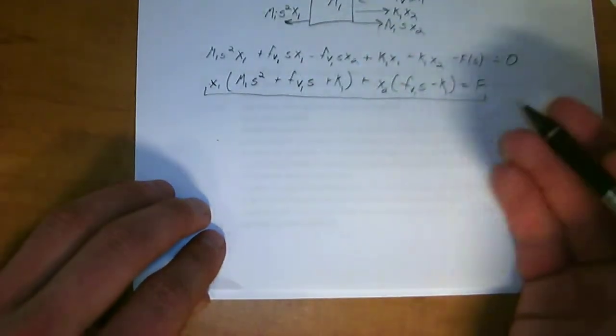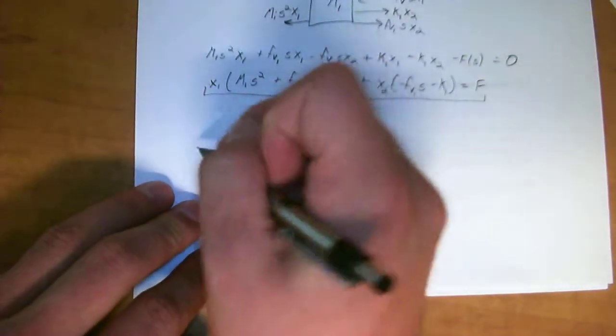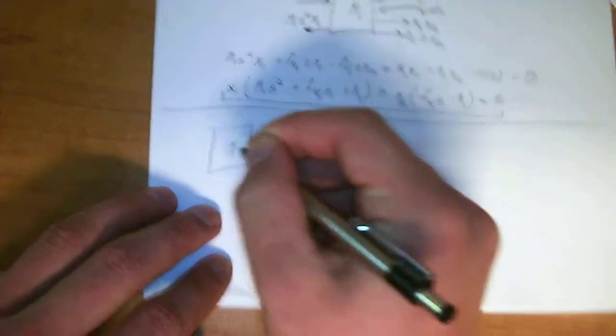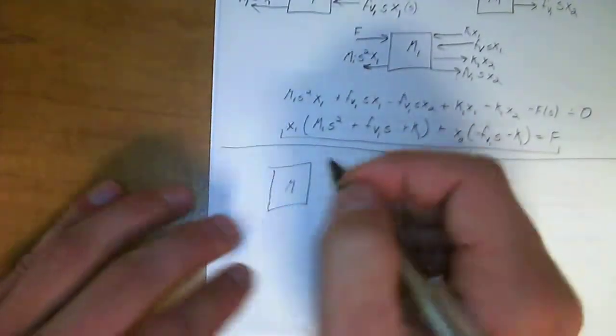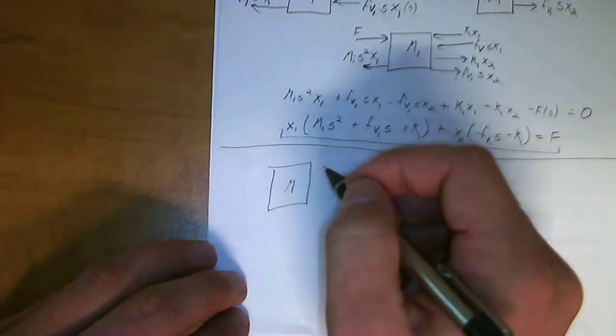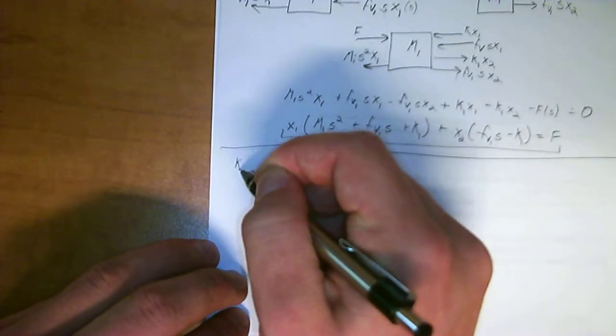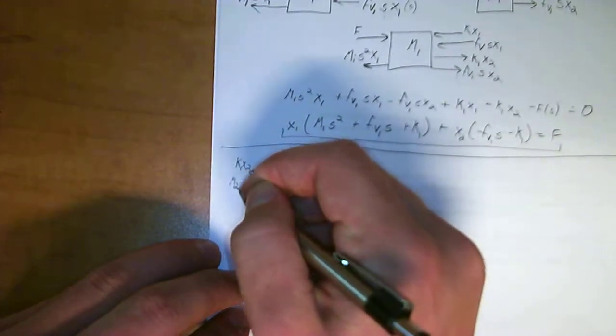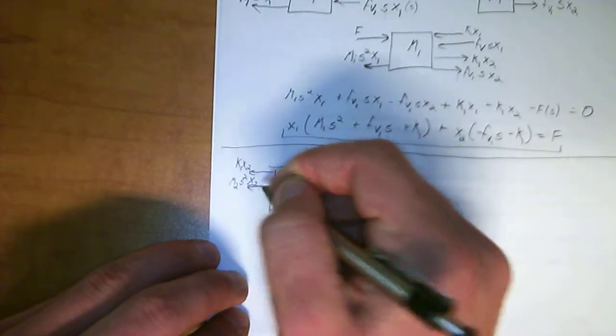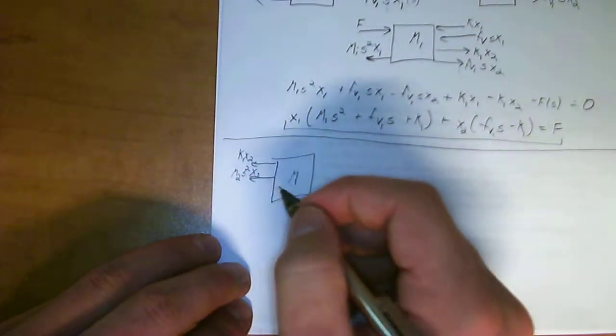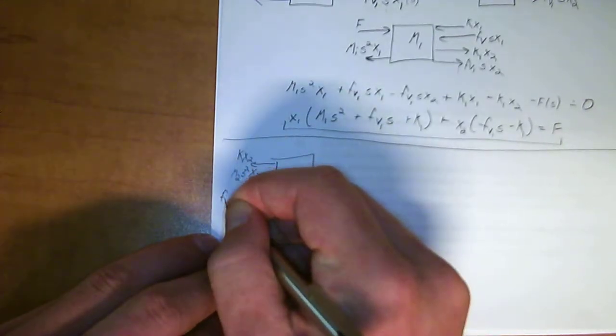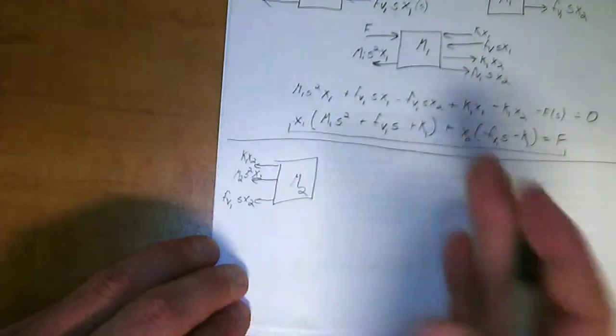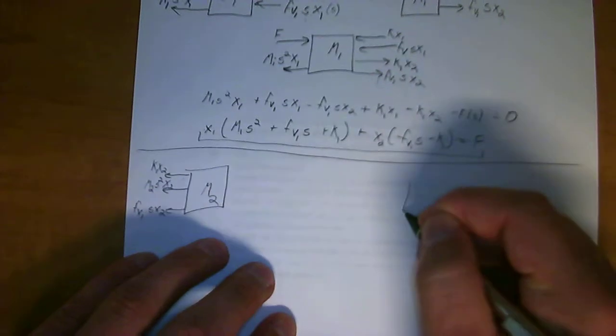Now for m2, what you're going to do is the exact same thing, only you're going to focus on m2 now. I'm going to split this in half a little bit here so you can see the difference. But m2, what you'll have is if m2 is moving, you set it in motion, then it's going to have the resistance of this spring, which is k1 x2. And since it's moving, it's going to have a resistance of m2, again the inertia, s squared of x2. And then the resistance due to the damper, which is fv1 s x2. So this is if m2 is put into motion and is moving.